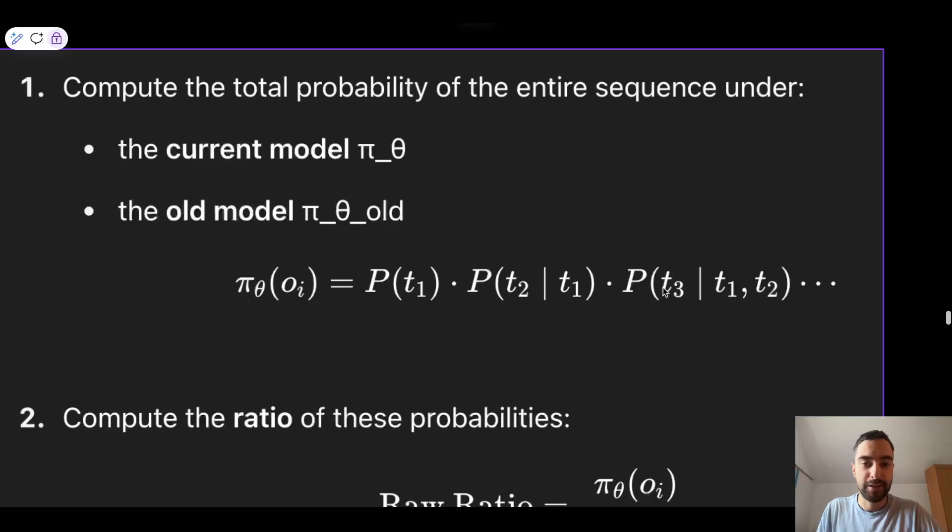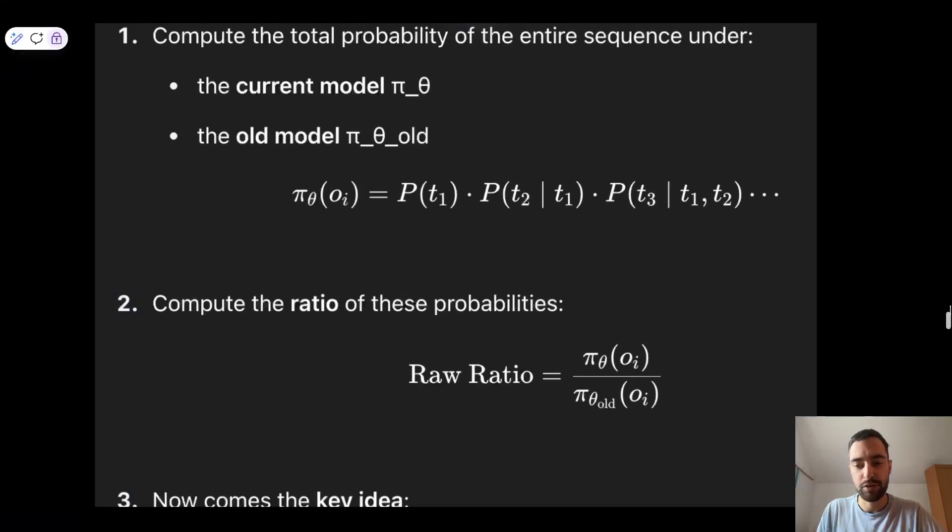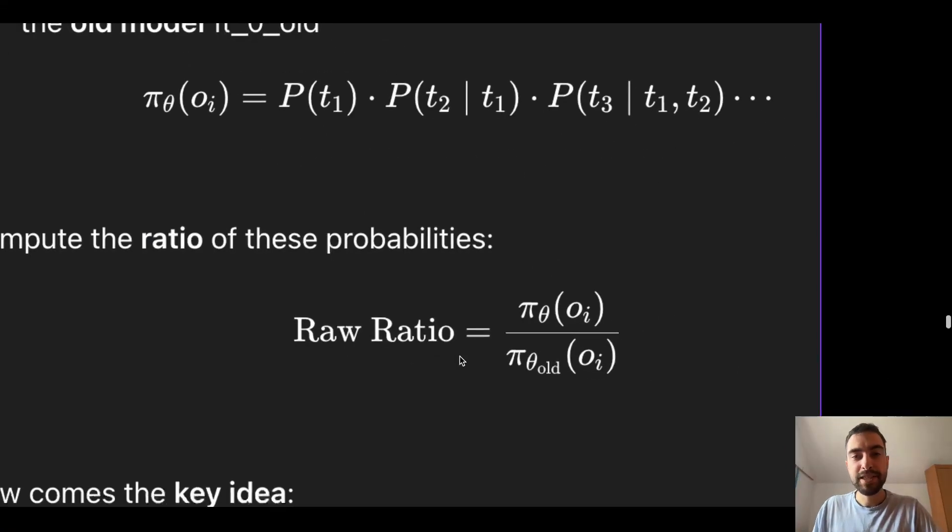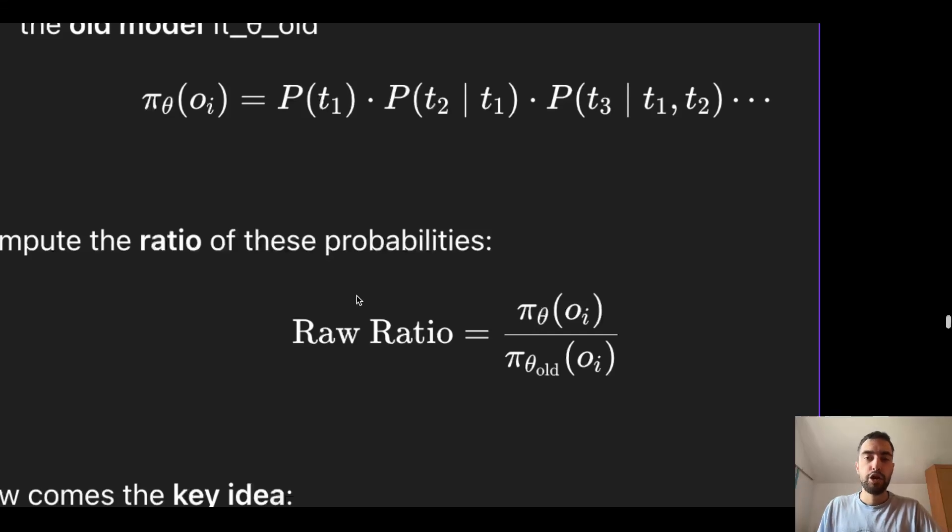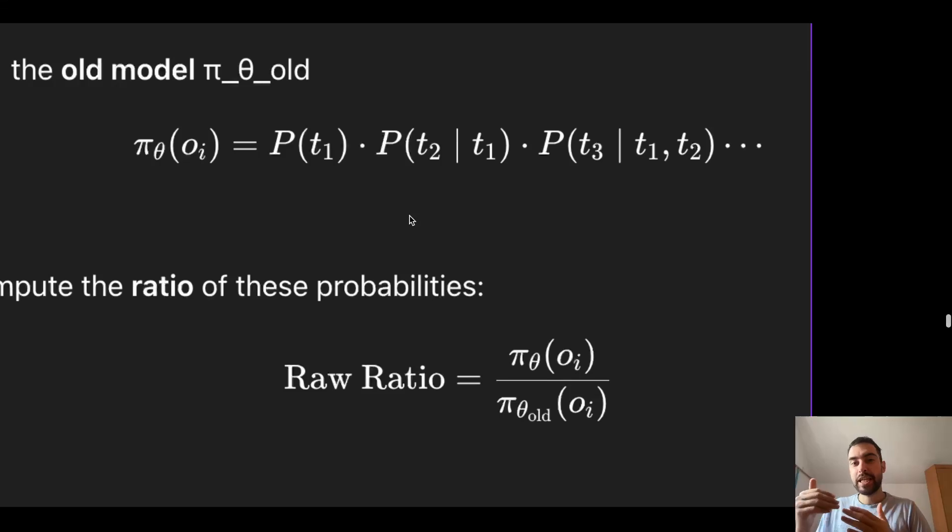And we do that for both new model and the old model. And now we divide probability of the new model with probability of the old model to get this raw importance ratio. But there is a hidden problem here. So initial idea is to, instead of updating each token with separate importance ratio, we want to update each token with average importance ratio across the entire sequence.